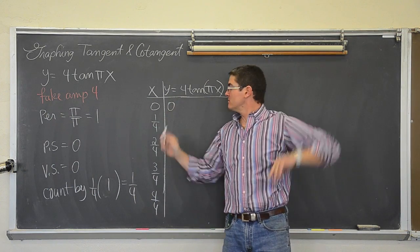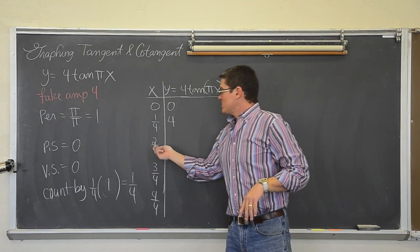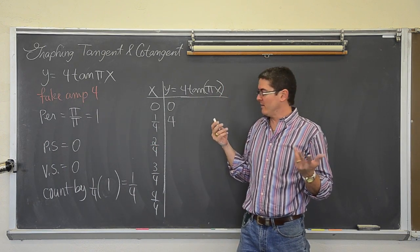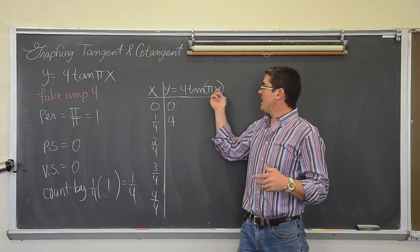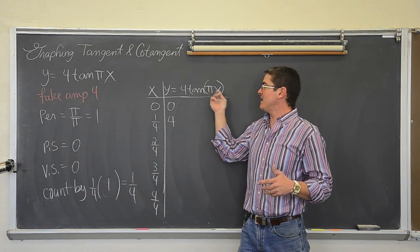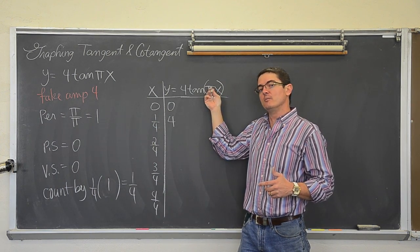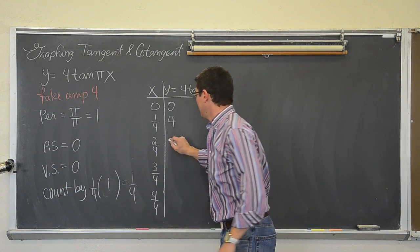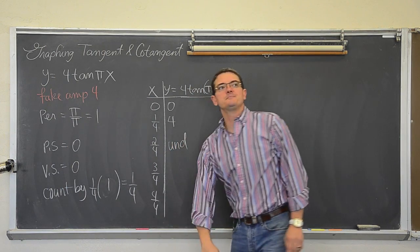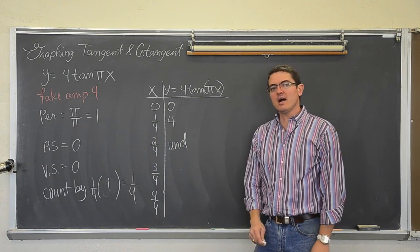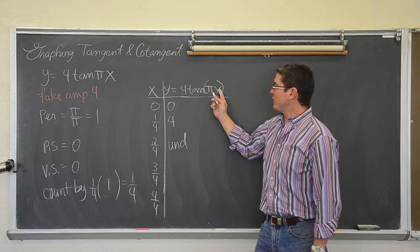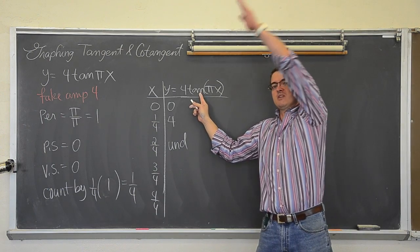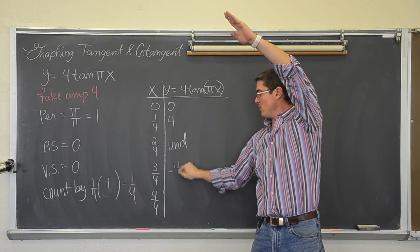1 times 4 is 4. At 2π/4, or one-half: one-half times π is π/2. The tangent of π/2 — y over x, you are dividing by zero — is undefined. Plugging in 3/4 gives 3π/4. The tangent of 3π/4 is negative 1, so we have negative 4.